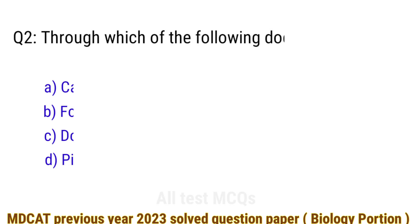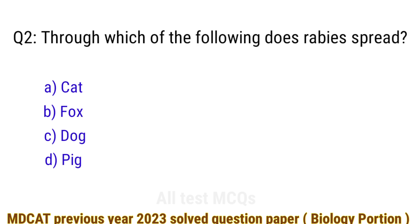Question number 2. Through which of the following does rabies spread? The right answer is option C: dog.